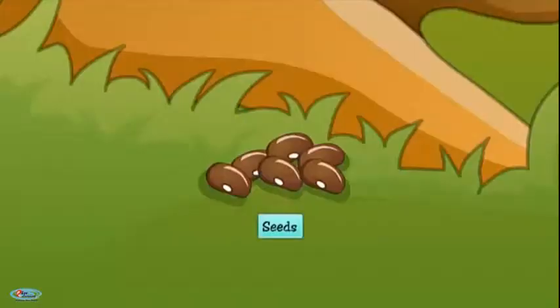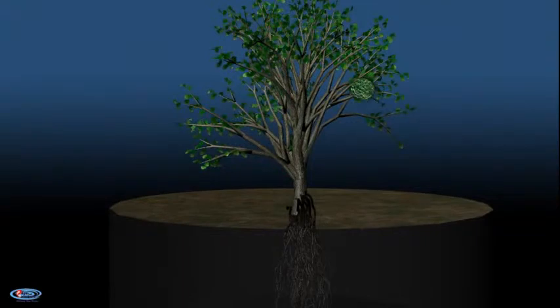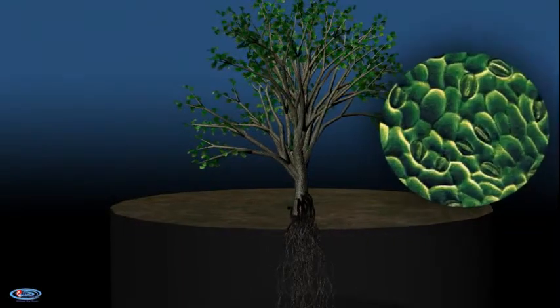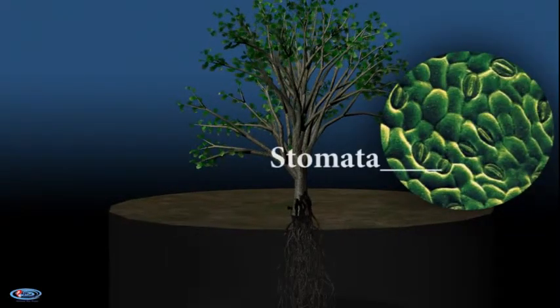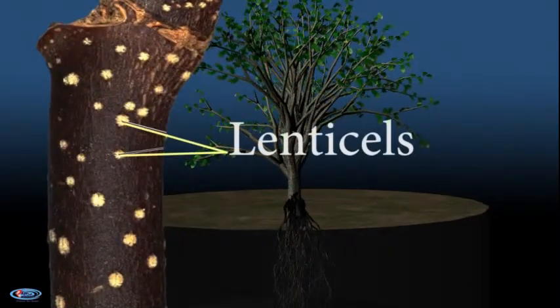catabolic process of releasing energy from simple sugars for carrying out life processes. Plants, unlike animals, have no specialized organs for gaseous exchange, but they have stomata and lenticels for this purpose.